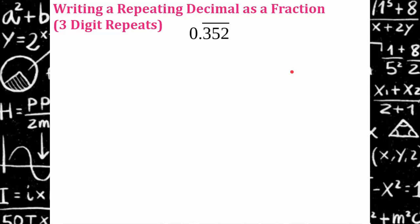Alright. I'm going to ask you to pause. Try this one on your own. 0 point 352 repeating. So my hint will be, what will you multiply both sides by in the second equation? Remember, you add a zero for every repeating digit. Go ahead and hit pause. Come back and hit play when you're ready to check your work.